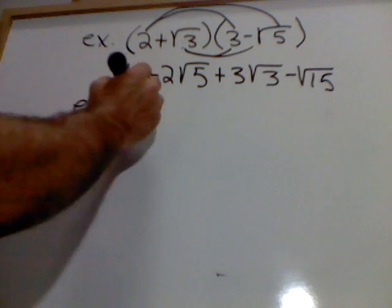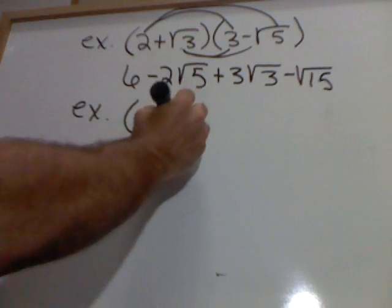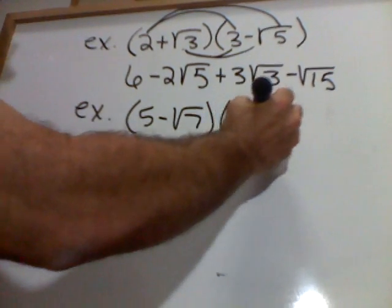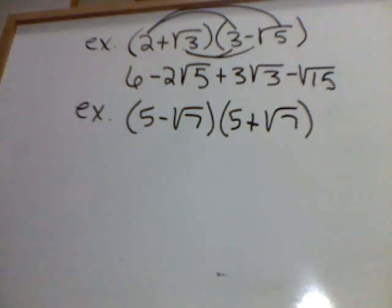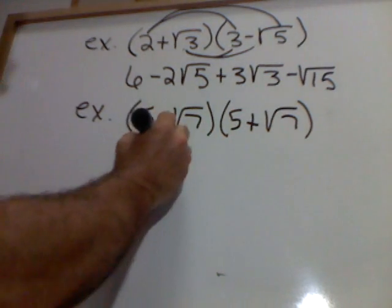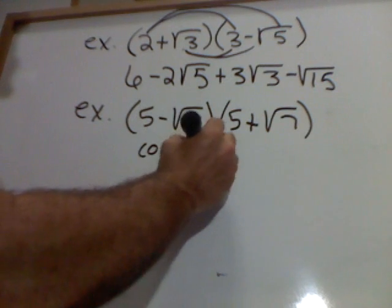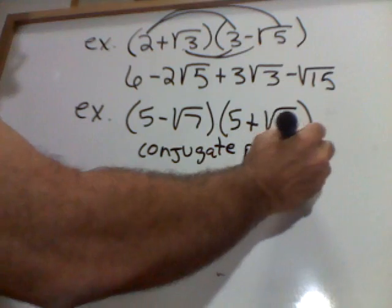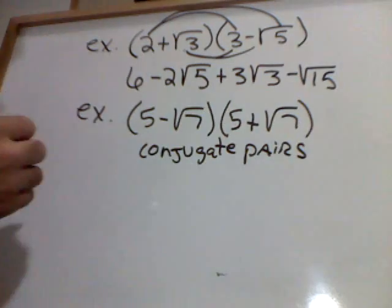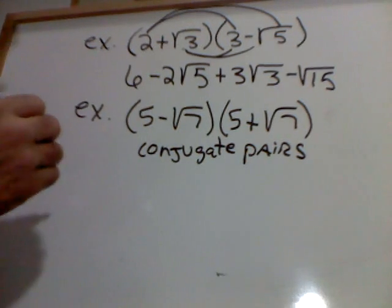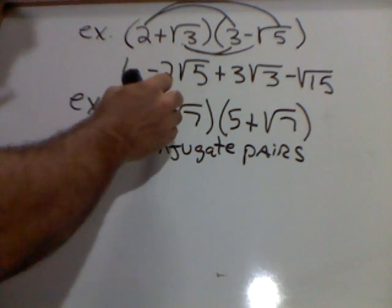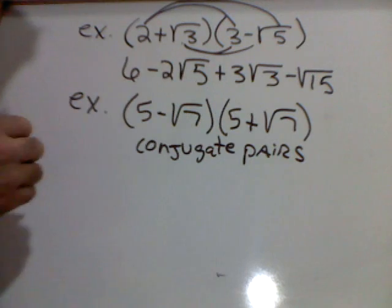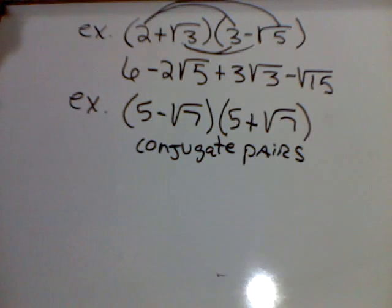I'm going to do 5 minus the square root of 7 times 5 plus the square root of 7. Y'all, these are called conjugate pairs. That means that everything is the same except the operation. One's being subtracted. One's being added. But notice, the 5's are the same inside. And then I have the square root of 7's.